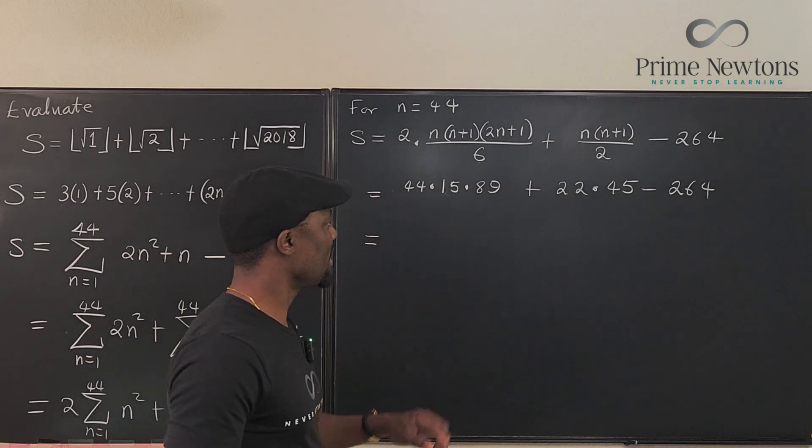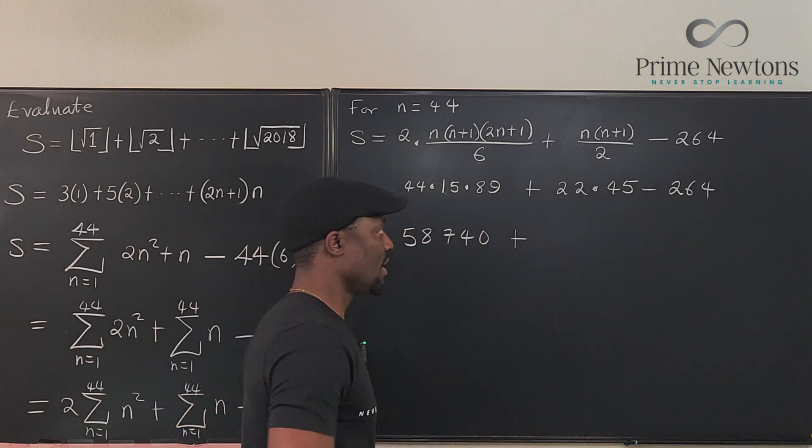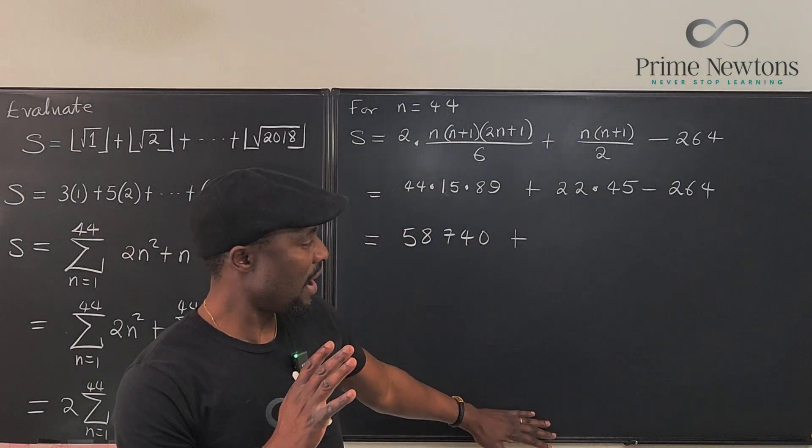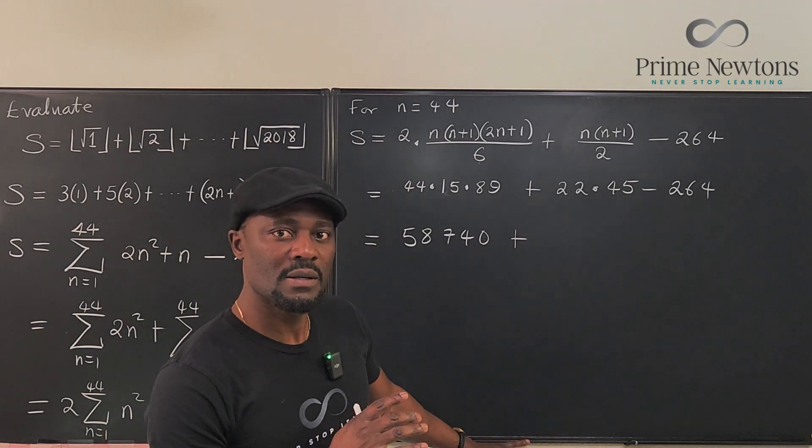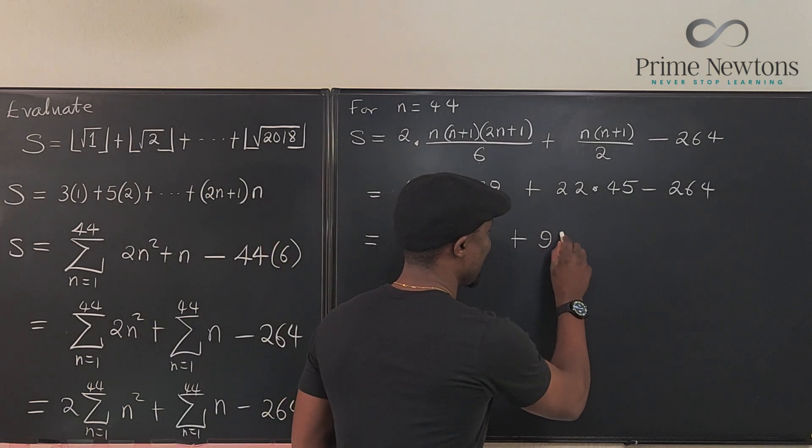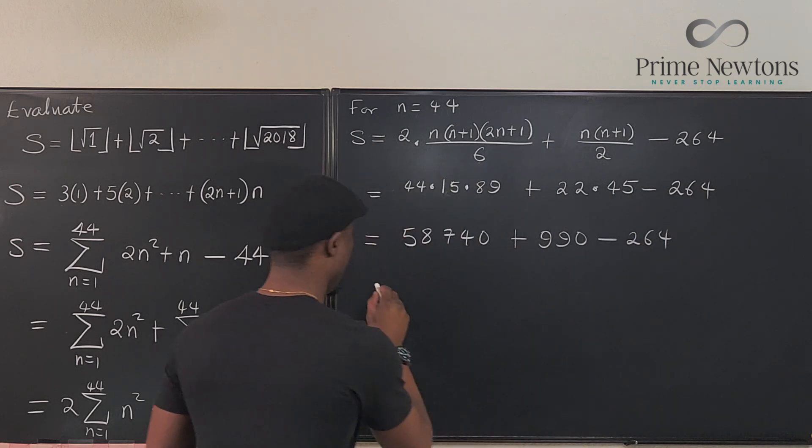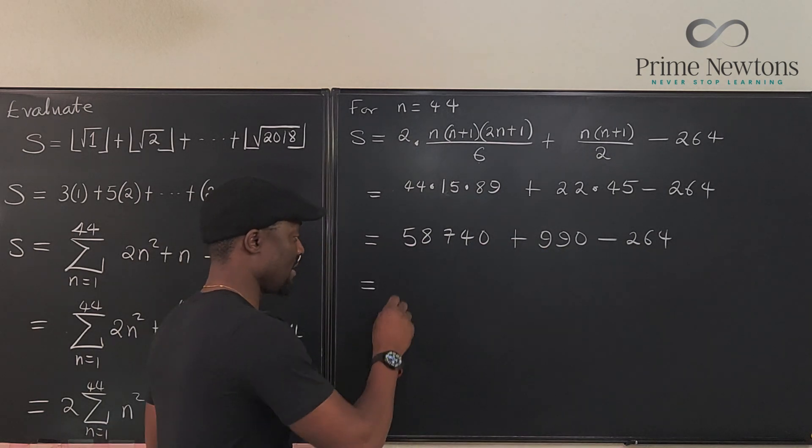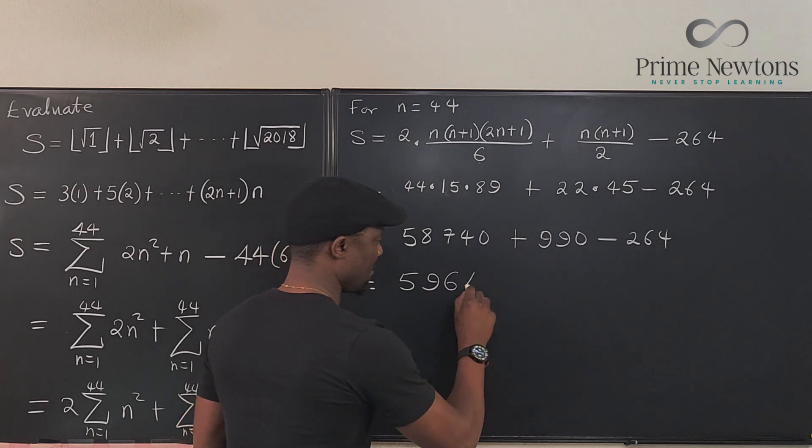Now, the multiplication, I leave it to you. But if you sum this up, you're going to get 58740. If you multiply these two together, it's going to be 90 plus 900, which is 990. So it's going to be 990 minus 264. It's getting easier. So if you do your little arithmetic and you add these together, you get 59644.